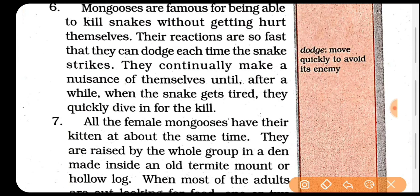Jo mongoose hain woh famous hain for being able to kill snakes without getting hurt. Unki jo reactions hain woh bahut hi fast hain — woh dodge kar jaate hain snake ko. Jab snake strike karta hai to woh wahan se hat jaate hain. Yeh baar baar karte hain — jab bhi snake attack karta hai to woh door hat jaate hain — tab tak karte rehte hain jab tak ke snake gets tired. Aur uske baad woh quickly dive kar ke — in for the kill — ek dam se dive kar ke saamp ko maar dete hain.